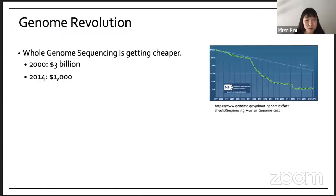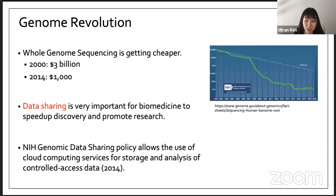The cost of full genome sequencing dropped so fast. In 2000 it cost $3 billion, and it fell to $1,000 in 2014. This allows researchers to access large genomic data sets. Data sharing is of great importance to speed up discovery and promote research. In 2014, NIH issued the genomic data sharing policy that allows the use of human genomic data for research and the use of cloud computing service for storage and analysis.